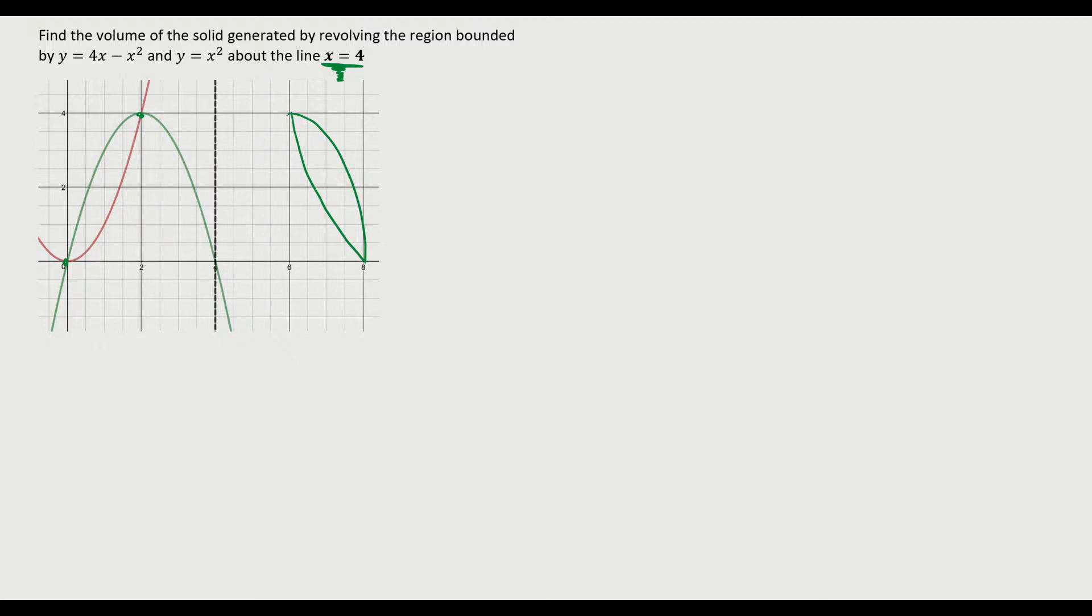If I wanted to attack this with the disk or washer method, I would have to notice that because I'm going about this vertical line, my representative slab would be perpendicular to that axis. So it'd be right here. And you can see how if I revolve this thing around the curve, it would form a little washer. Beautiful washer.